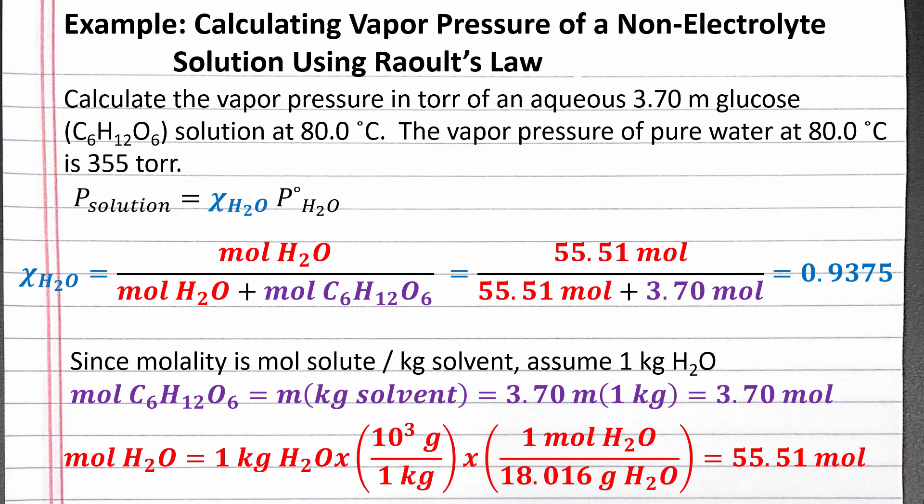Plugging this mole fraction of solvent into Raoult's law along with the vapor pressure of water at 80.0 degrees Celsius, we get 333 torr for the vapor pressure of the solution.